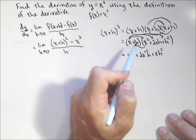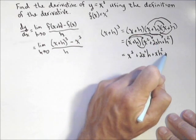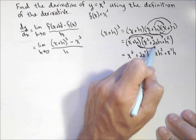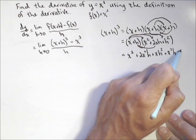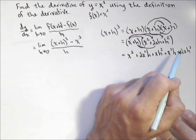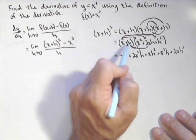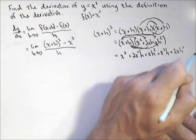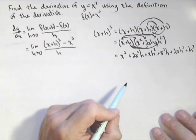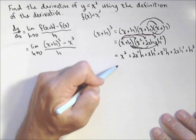Now we need to FOIL the h through. So plus x²h, plus 2xh², and then finally, plus h cubed. So that's one way of doing multiplication of these kinds of binomials.